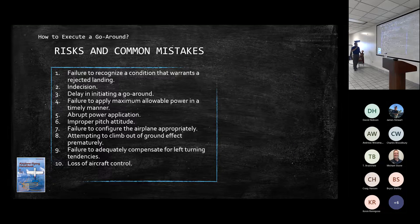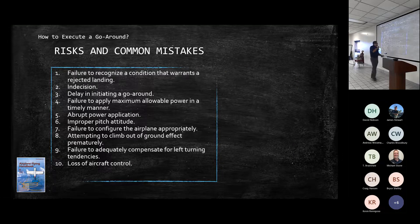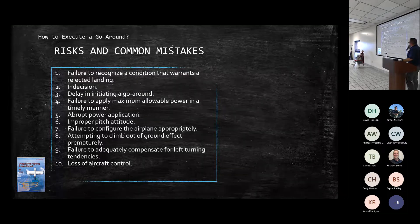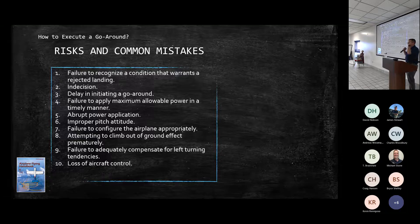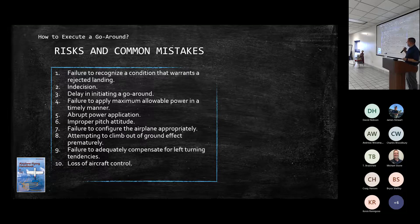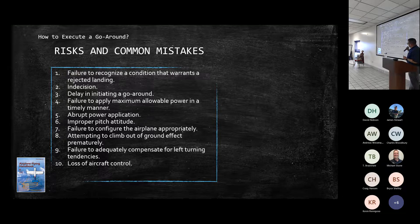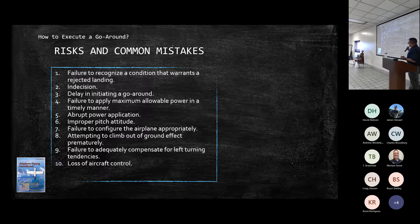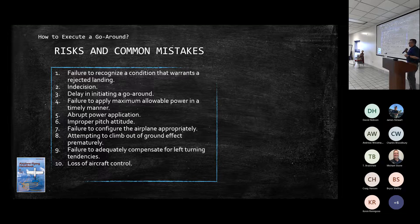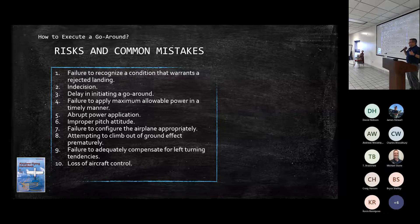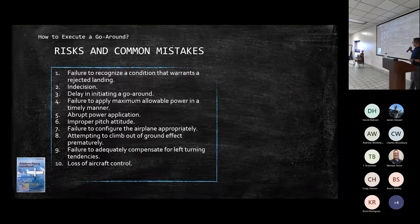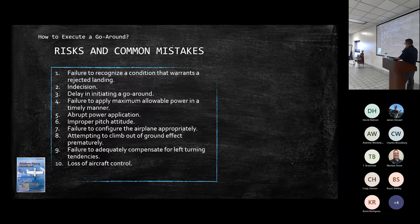So common risks and mistakes: failure to recognize a condition that warrants rejected landing, indecision, delay in initiating that go-around, and then failure to put in max power. I can't tell you the number of times I've had a student put in about half power, and then they dump all their flaps, and it's like nice. Luckily, the flaps take forever in our airplane to do anything, so you can quickly adjust for that, and if you're guarding the controls. But making sure that they're getting the right things in there as a pilot and as an instructor. Abrupt power application, we talked about improper pitch attitude. So this is something I see is there's the fear of the ground suddenly. Full power goes in, we have trim in there already, and then you add a bunch of back pressure. Not great going back to load factor and a number of other things and getting down to that low energy state.